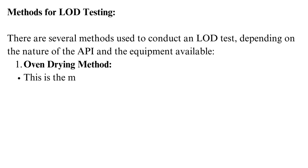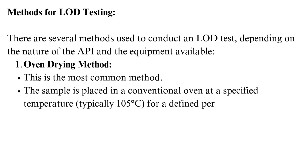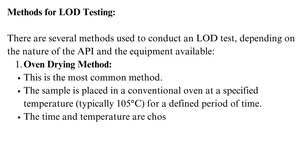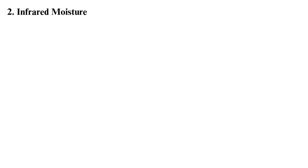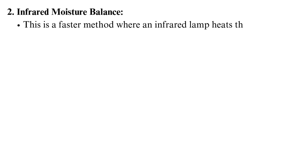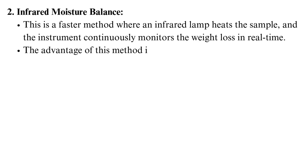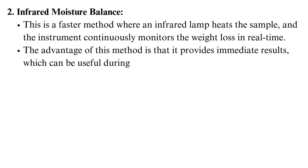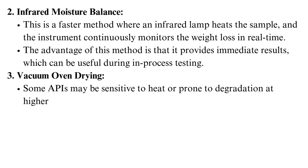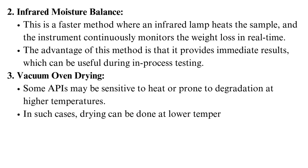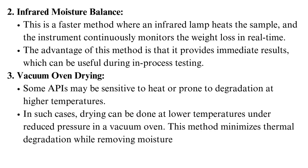The oven drying method is the most common: the sample is placed in a conventional oven at a specified temperature, typically 105°C, for a defined period of time. The infrared moisture balance is a faster method where an infrared lamp heats the sample, and the instrument continuously monitors the weight loss in real time, providing immediate results useful during in-process testing. For APIs sensitive to heat, vacuum oven drying at lower temperatures under reduced pressure minimizes thermal degradation while removing moisture and solvents effectively.